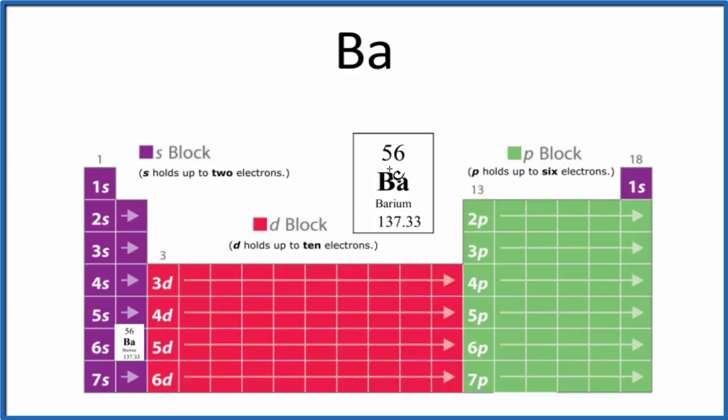If we look at the periodic table, barium has atomic number 56. That means it has 56 protons. Since it's neutral, it also has 56 electrons. So when we write the electron configuration for barium, we'll have 56 electrons.